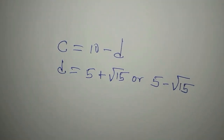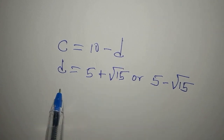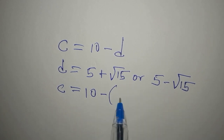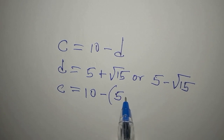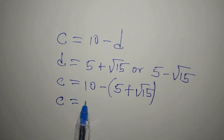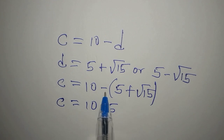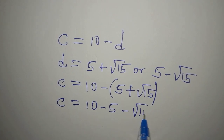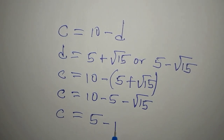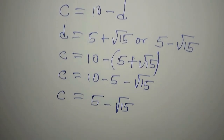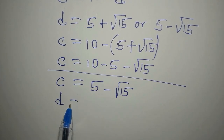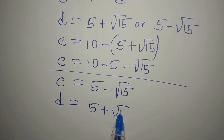For the first value, d equals 5 plus root 15. So c equals 10 minus open bracket 5 plus root 15, which gives c equals 10 minus 5 minus root 15, so c equals 5 minus root 15. Therefore when d equals 5 plus root 15, c equals 5 minus root 15.